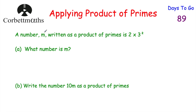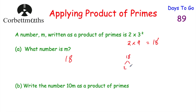A number m, written as a product of primes, is 2 × 3². We're asked what m is. Using order of operations, we do the squaring first: 3² = 9. Then 2 × 9 = 18. So m = 18. We can check: starting with 18, that's 2 times 9, where 2 is prime and 9 = 3 × 3. So 18 = 2 × 3 × 3 = 2 × 3². Confirmed, m = 18.